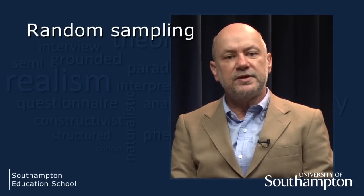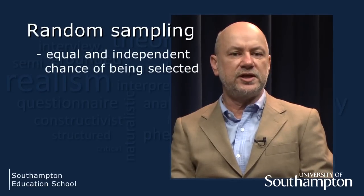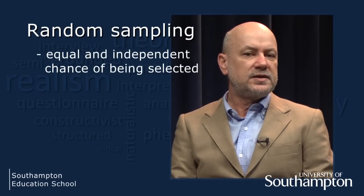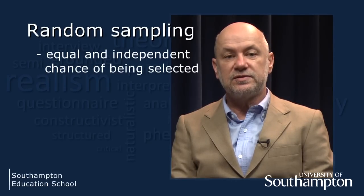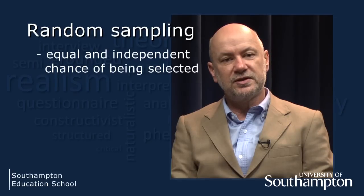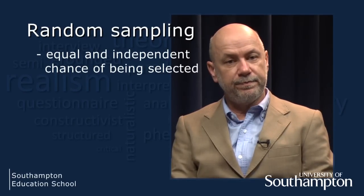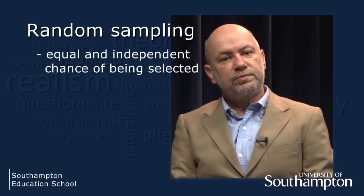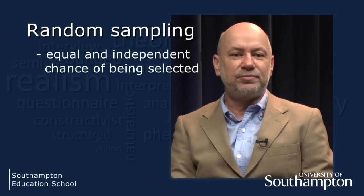If you want to generalise from your study to a wider group of people, then it is important that your sample is representative of the wider group. To achieve this you need to use a probability method. There are numerous probability-based methods – I'm going to select three of the most common. A simple random sampling method means that everyone in your research population has an equal and independent chance of being selected for your sample. To select a random sample, I would first generate a list of the names of everyone in my research population – we call this a sampling frame. Then I would put all the names into a hat and select an appropriate size sample.